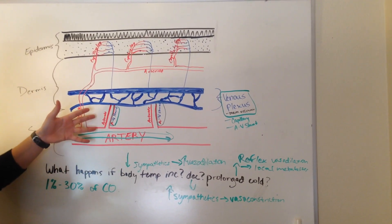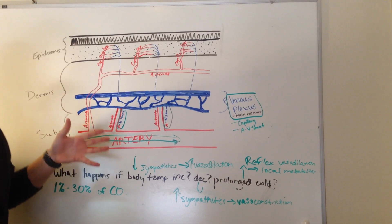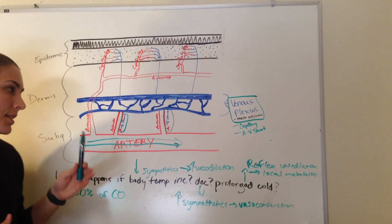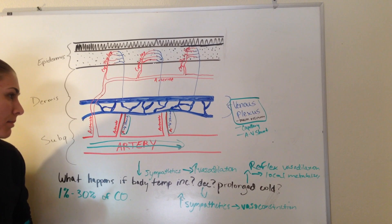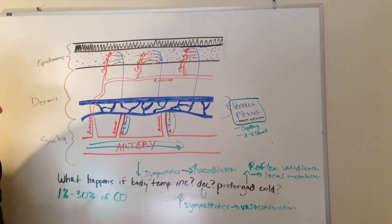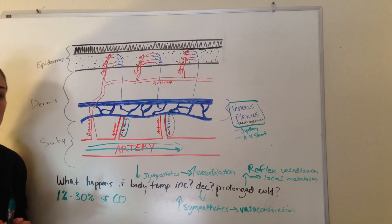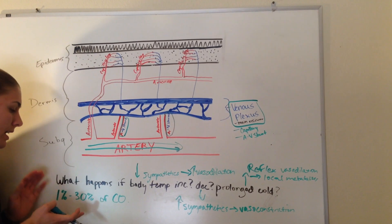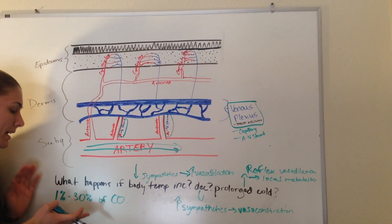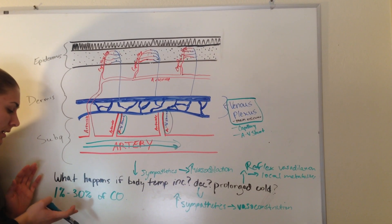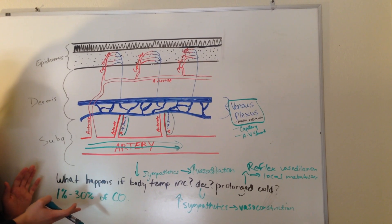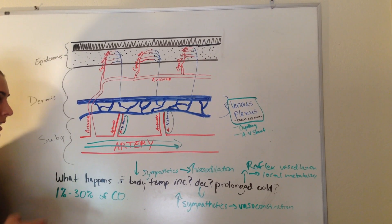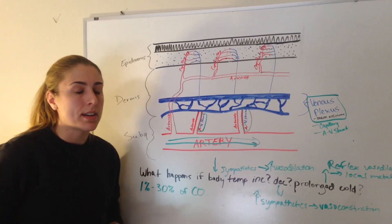I drew it like this — it's the same concept as Stanley's diagram, but I thought this was a little bit simpler to understand. One last point I wanted to emphasize about how important cutaneous circulation is: at any point in time, your skin can have either 1% of your cardiac output or 30% of your cardiac output. Good luck guys, I hope you do well. Email me again if you have any questions.